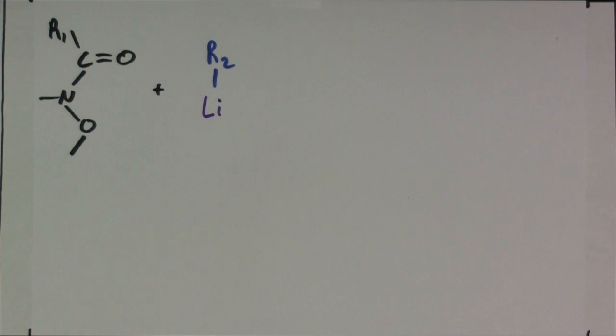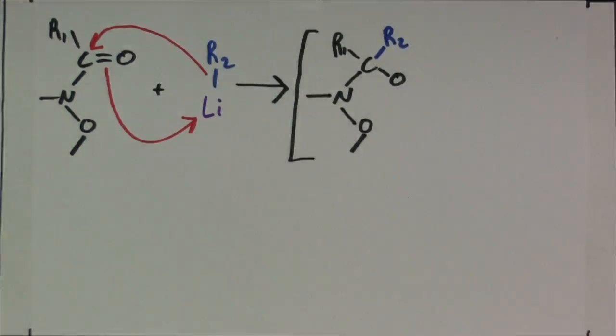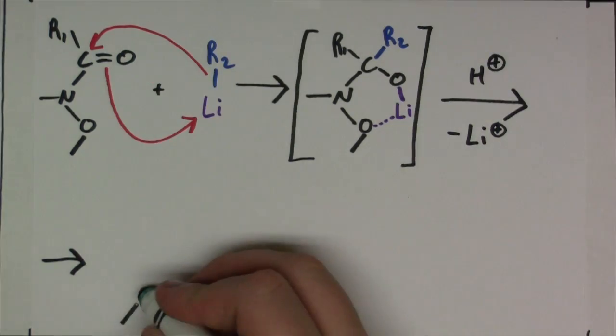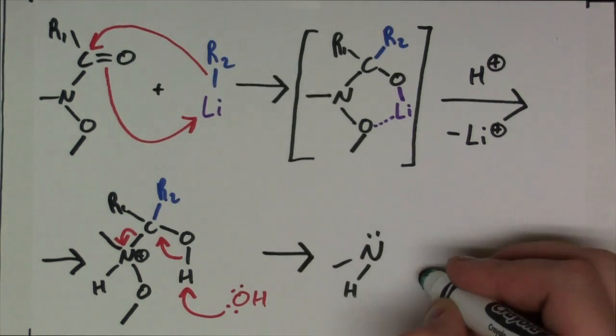The mechanism looks a bit like this. The partial negative charge on the carbon in the R2 group attacks the ketone carbon, pushing electron density onto the oxygen, giving oxygen a third lone pair. The metal ion can now chelate between the carbonyl oxygen and the N-methoxy oxygen. And since this tetrahedral intermediate doesn't collapse until acidic aqueous workup, no over-addition occurs.